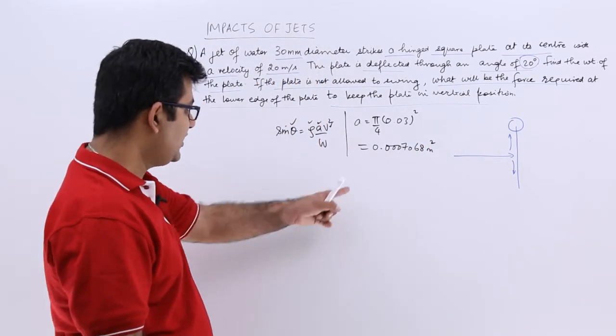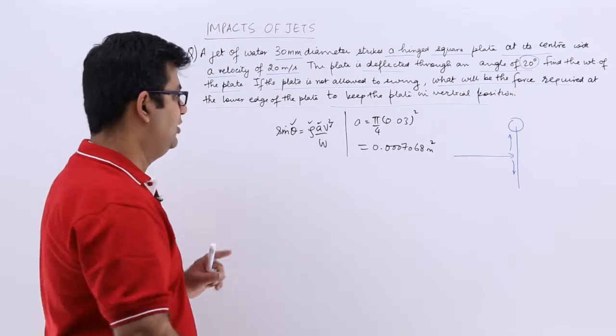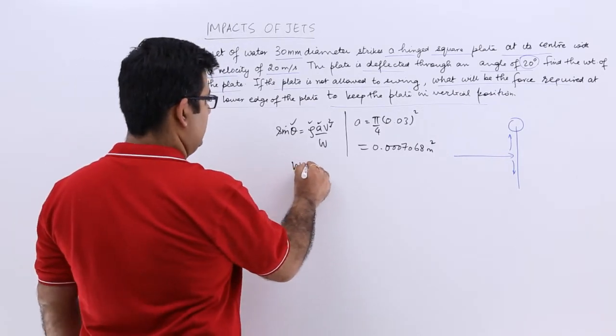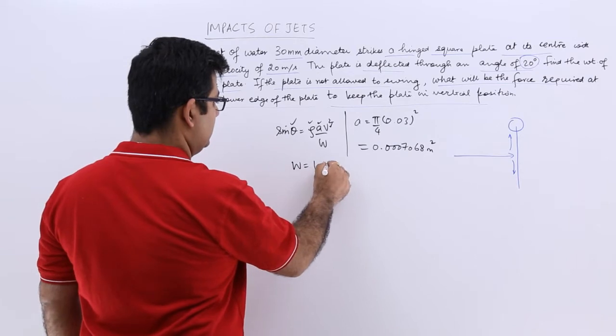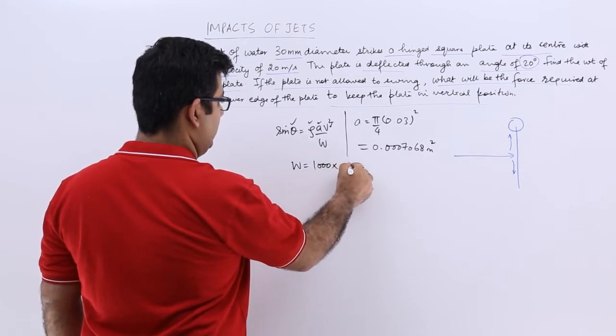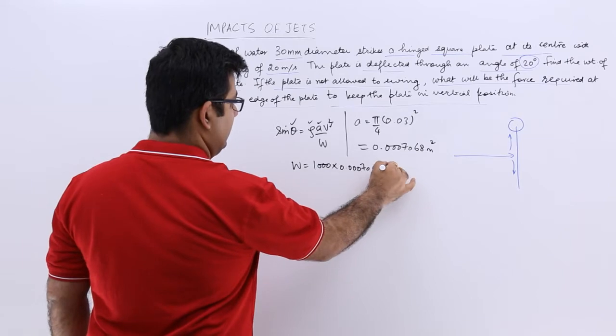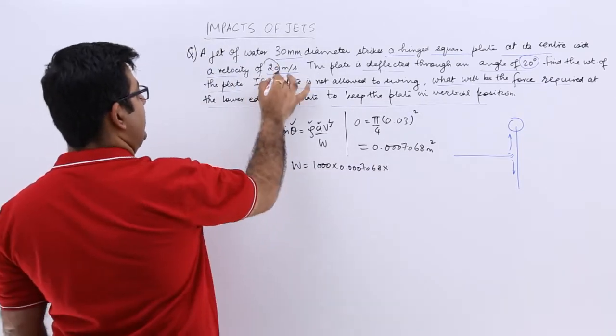So area is done, so from this I can find out w. W is 1000 into this area, which is 0.0007068, into velocity squared. Velocity is 20, so it means 400.